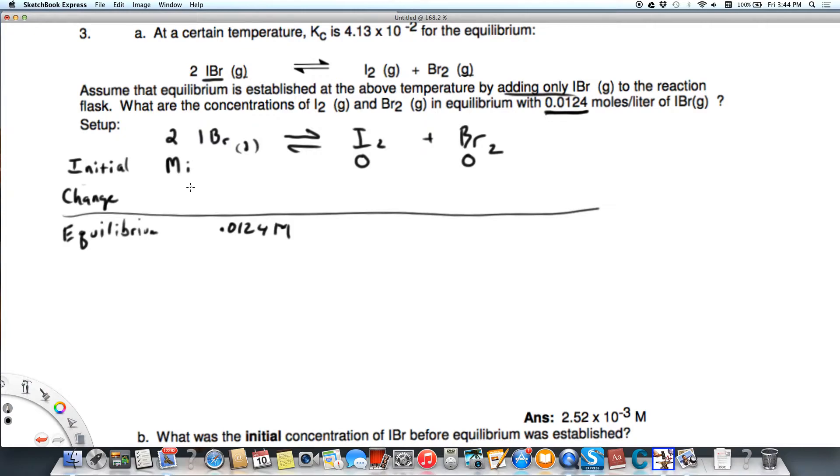The change is going to be that I2, we'll call that going up plus x, and then Br2 goes up plus x. We know that has to be positive x. It can only go up because we're at zero.